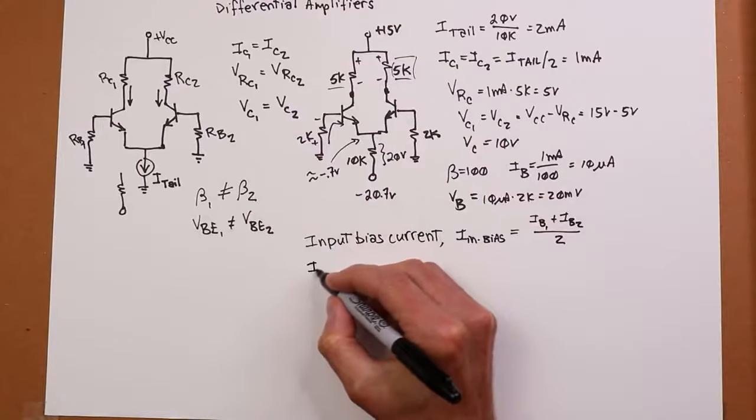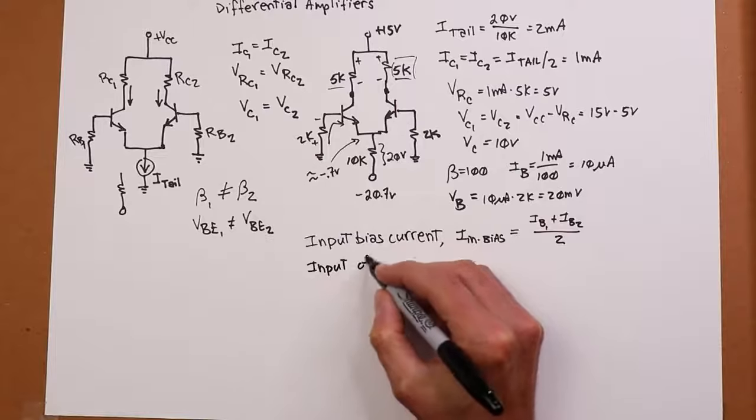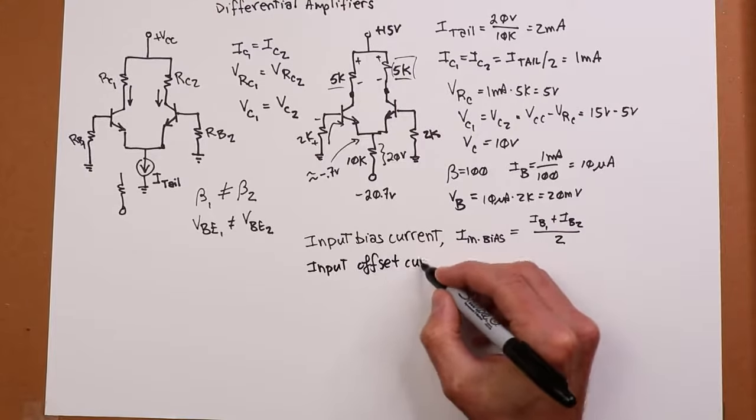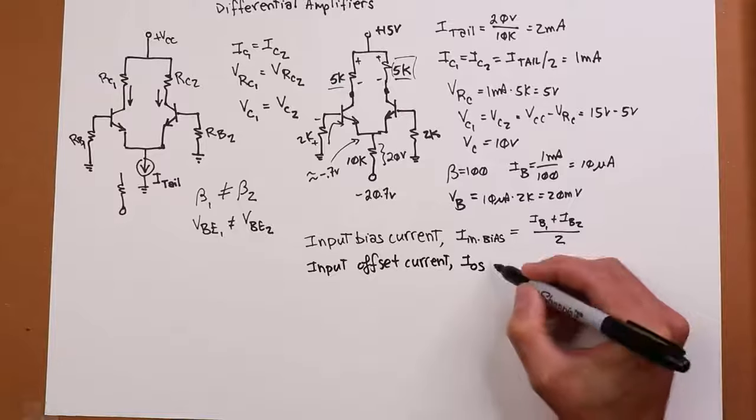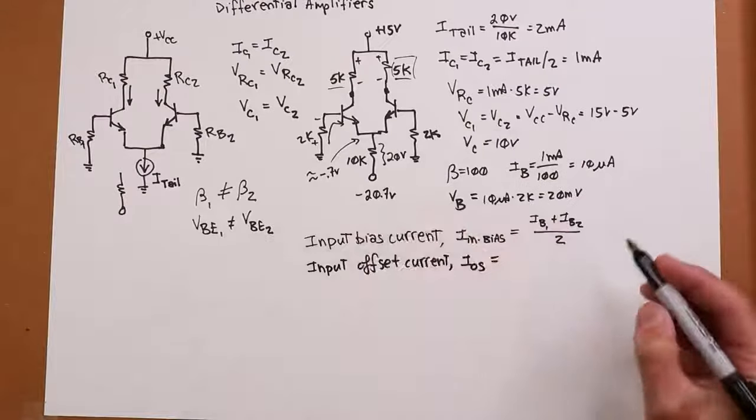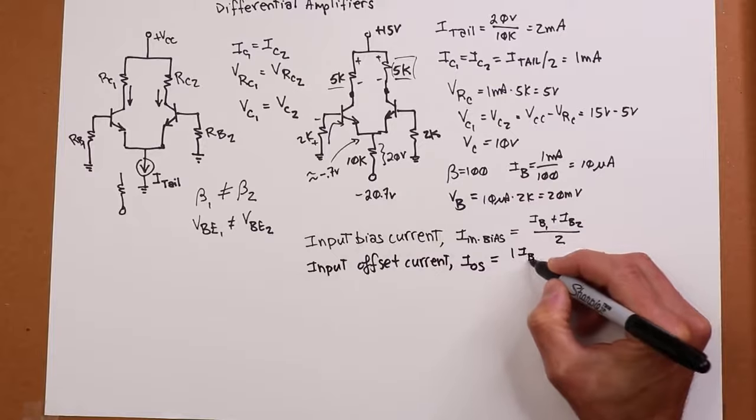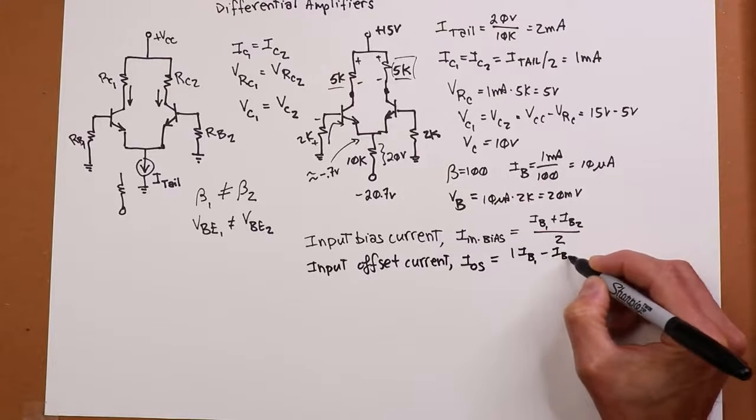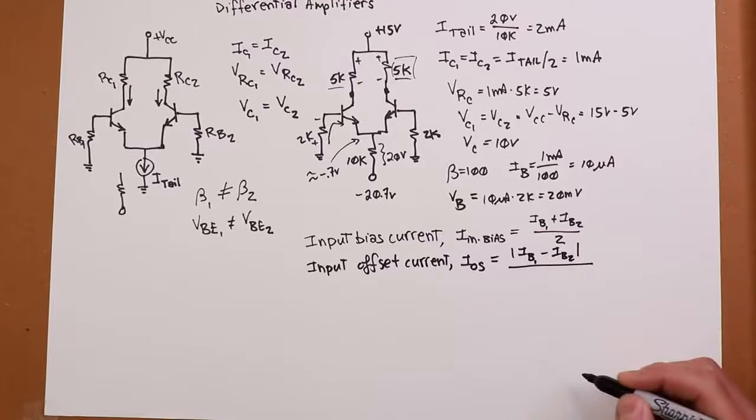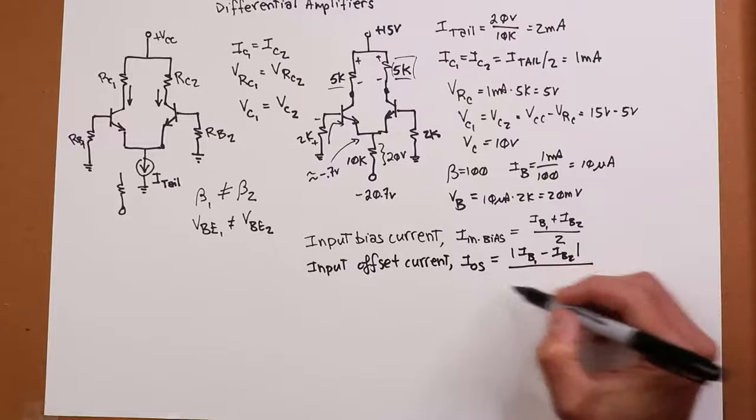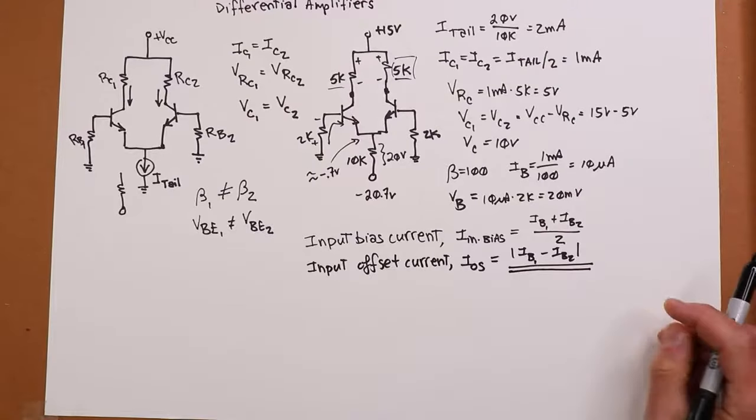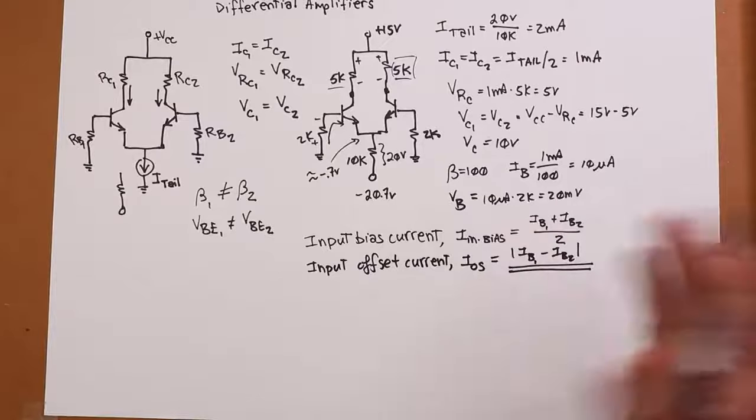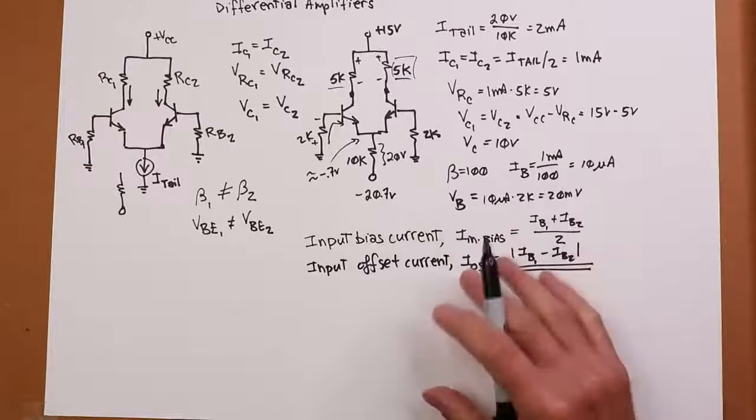But how good is the match? Well, that we call the input offset current. That we actually have a name for, IOS. The input offset current. And what we do is we look at the difference between these two things, IB1 and IB2. Take the absolute value of that, just the magnitude. So that gives us the difference. And whatever we come up with, ideally it'll be zero. But whatever we come up with, that's our input offset current. Just take the absolute because we don't care really one way or the other, who's high, who's low. We just want to know how far off they are.